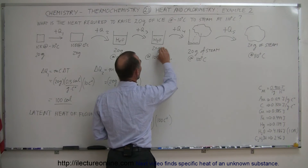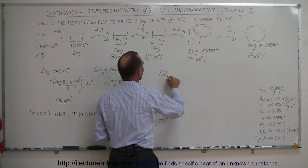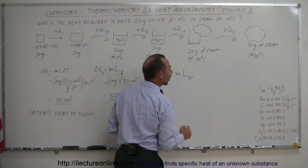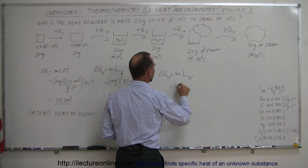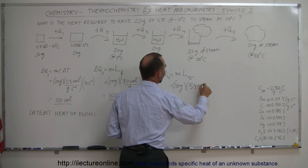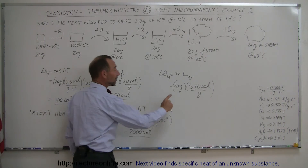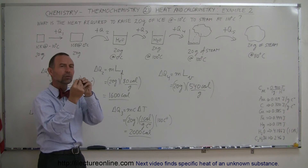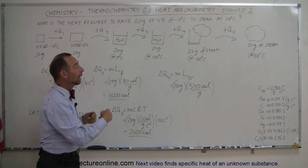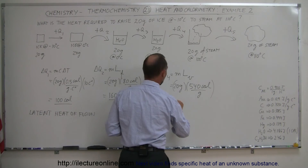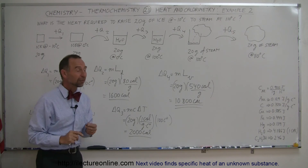Now we take the water at its boiling point and turn it completely into steam at the same temperature — another phase change. So Q4 = mass times the latent heat of vaporization. We're vaporizing water into steam. That's 20 grams × 540 calories per gram. To melt ice you need 80 calories per gram, but to turn water into steam you need 540 calories per gram, because those polar molecules are attracted to each other and you need enormous energy to break them apart. Q4 = 10,800 calories.